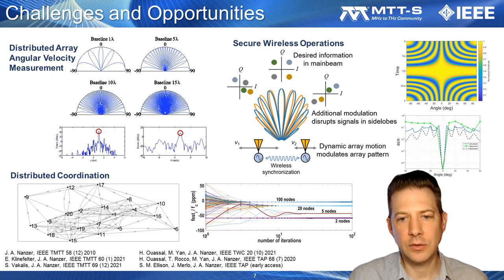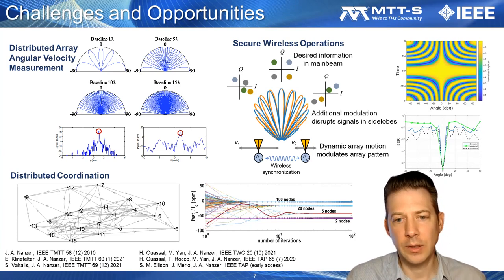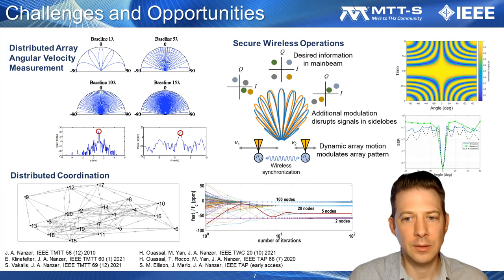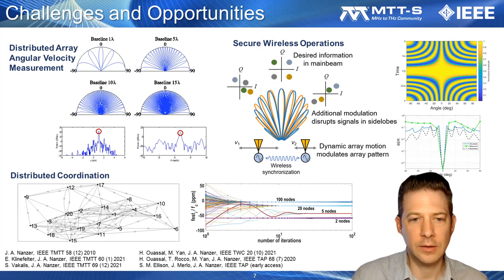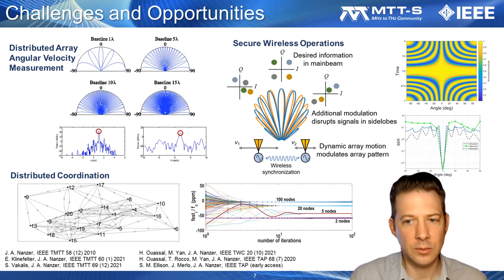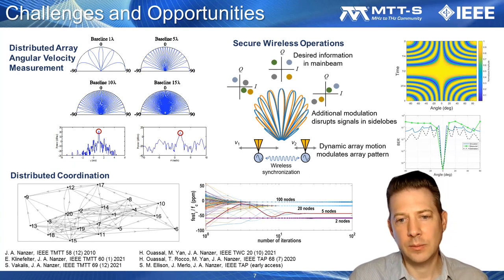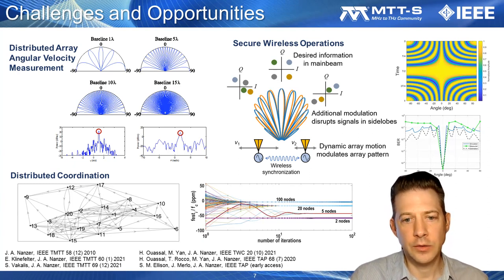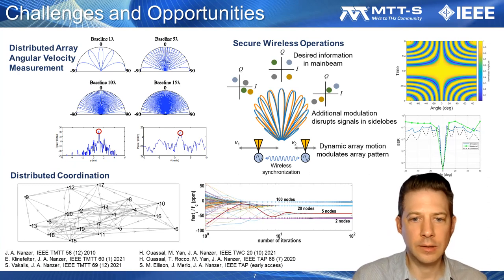I'll discuss how highly distributed apertures support multidimensional radar measurements to improve object tracking. Here on the top left, I show the measurements from a millimeter wave two-element system that simultaneously measures Doppler and angular velocity, which is supported by a highly distributed aperture. By adding dynamics into the system, the radiation pattern of the distributed array can be used to implement directional modulation, and this can be used for secure wireless operations, as I show here on the top right.